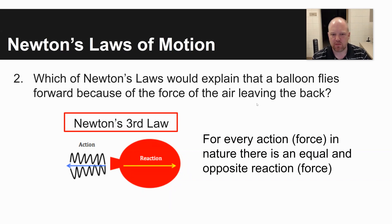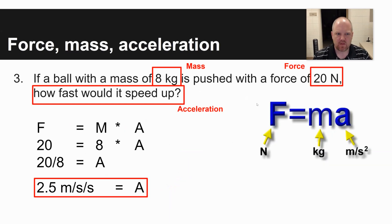Third question has to do with force, mass and acceleration. It says if a ball with a mass of 8 kilograms is pushed with a force of 20 newtons, how fast would it speed up? You are given mass of 8 kilograms, force of 20 newtons, and what is asked, solving for here, is acceleration. You'd use the equation F is equal to MA, force is equal to mass times acceleration. Force is 20, mass is 8, and solving for acceleration then you would take 20 divided by 8 to come up with an acceleration of 2.5 meters per second per second.